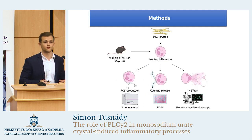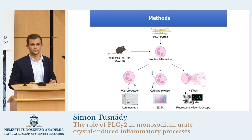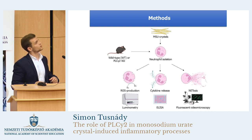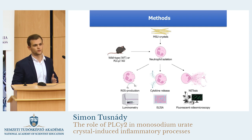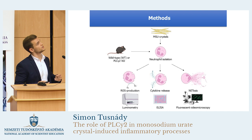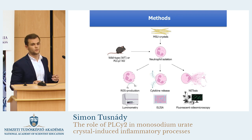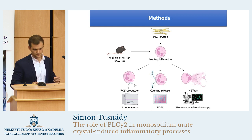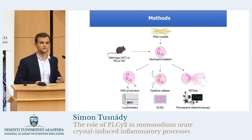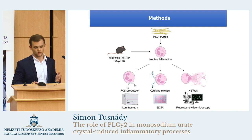To answer this question, we performed the following experiments. We used wild-type or PLC gamma 2-deficient mice for our experiments. In the PLC gamma 2-deficient mice, the gene of PLC gamma 2 was deleted through transgenic methods. Neutrophils were isolated from the mice, and they were stimulated by urate crystals. The cell responses were measured through several in vitro experiments. We used luminometry to measure the superoxide production, the cytokine release was measured by the ELISA method, and we used a fluorescent video-microscopic method to observe the process of NETosis.